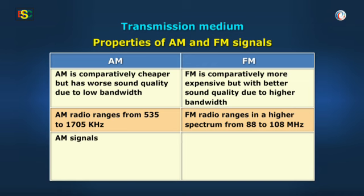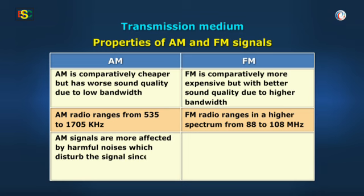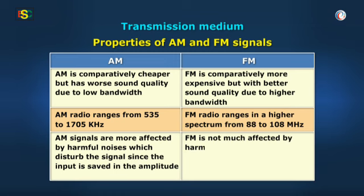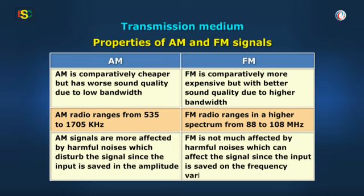AM signals are more affected by harmful noises which disturb the signal since the input is saved in the amplitude. FM is not much affected by harmful noises which can affect the signal since the input is saved on the frequency variation.